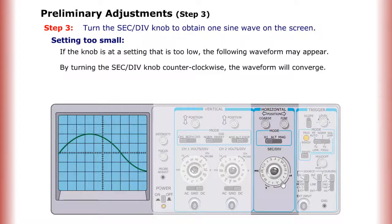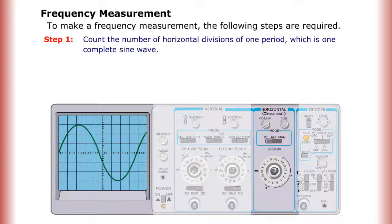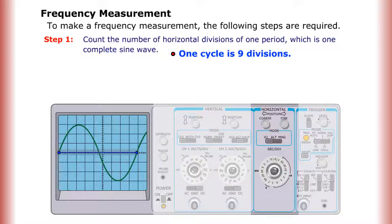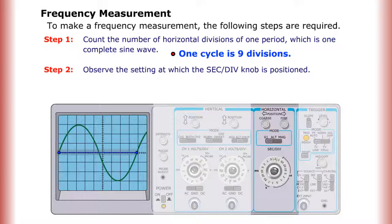Frequency measurement. To make a frequency measurement, the following steps are required. Step 1: Count the number of horizontal divisions of one period, which is one complete sine wave. In this example, one cycle equals nine divisions. Step 2: Observe the setting at which the seconds per division knob is positioned. Here, the knob is at the 0.2 millisecond position.